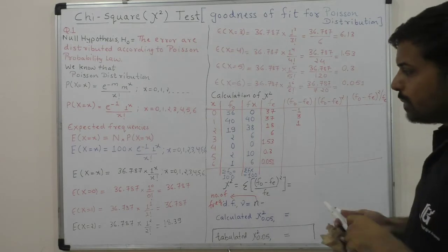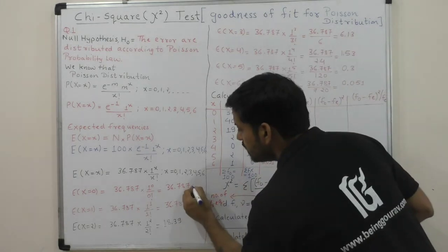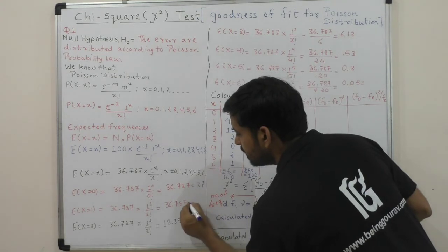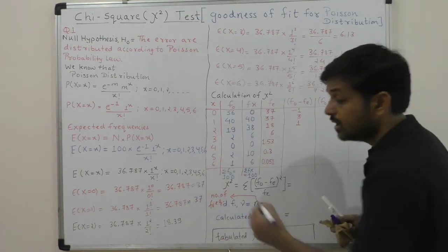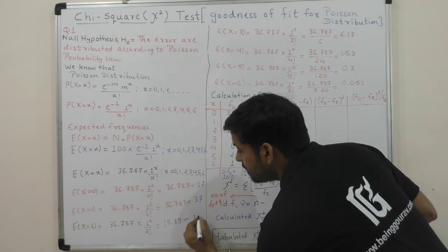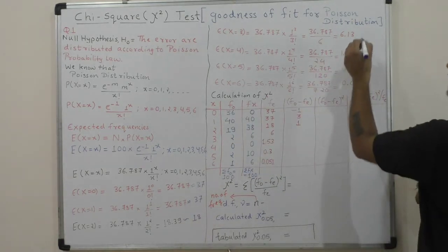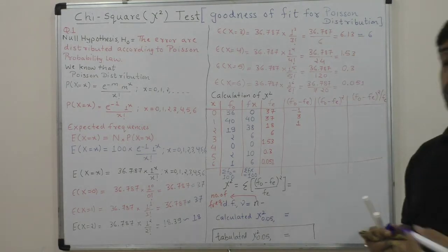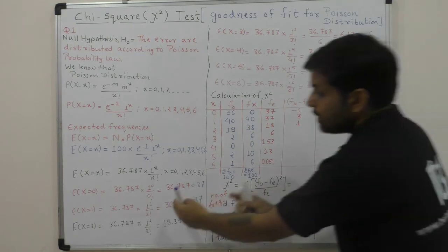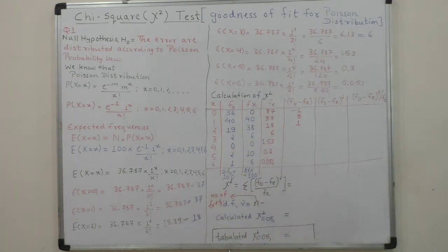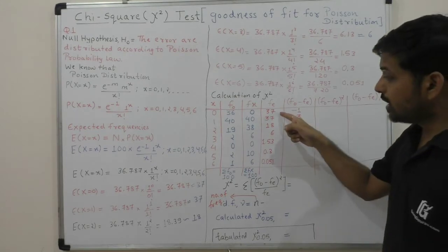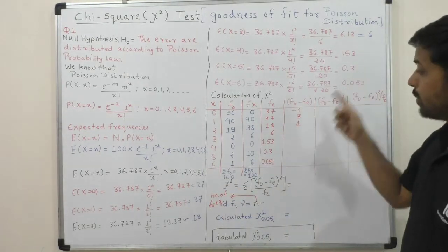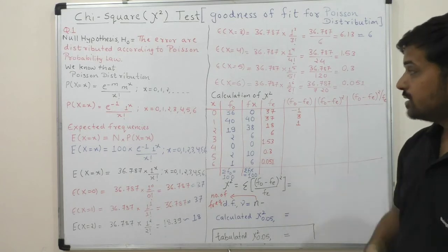Now we take approximate values. Since 36.787 approximates to 37, both x=0 and x=1 become 37. The value 18.39 approximately becomes 18, and 6.13 approximately becomes 6. So our expected frequency column has: 37, 37, 18, 6, 1.53, 0.3, 0.055.